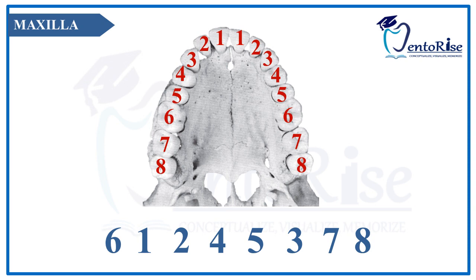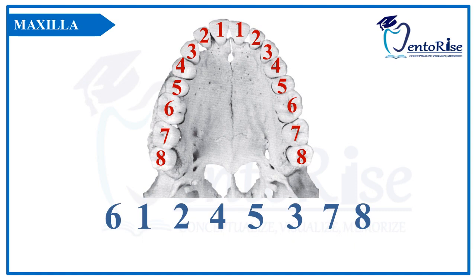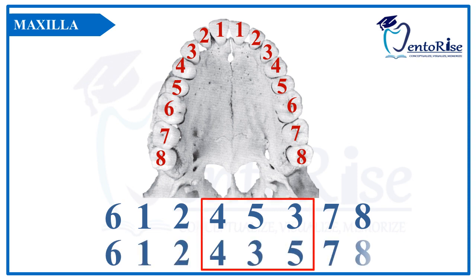However, in the mandible, the canine erupts after the lateral incisors and then the premolars erupt. However, there can be variations to this eruption sequence. At times, the canine erupts after the first premolar and then the second premolar erupts. In this scenario, the eruption sequence will go like 6, 1, 2, 4, 3, 5, 7, 8. This is a slight variation which needs to be remembered.